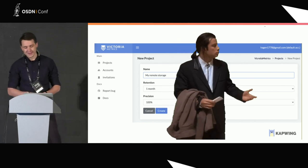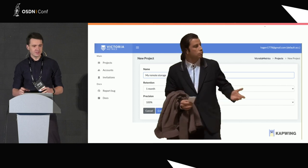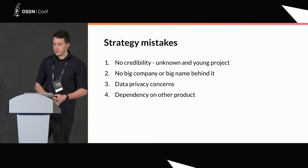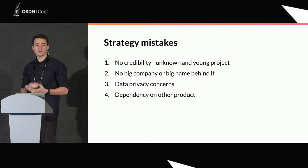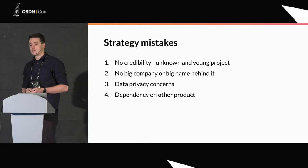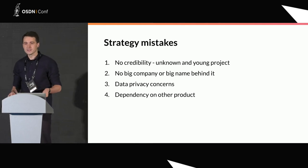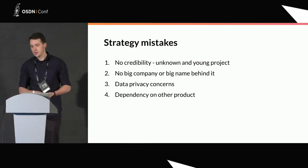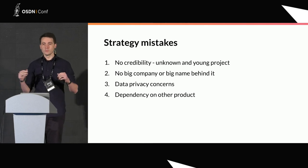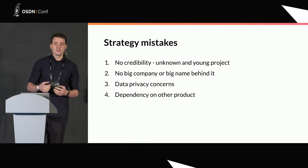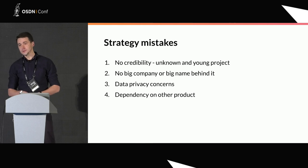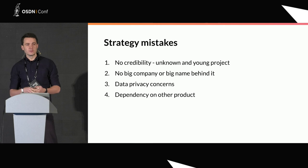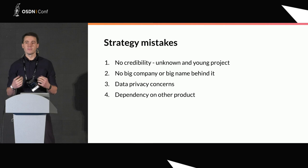I guess many of you know why. The strategy was a bit naive. A totally new, unknown database and company expects users to trust their data — and that will never work. What were our strategy mistakes? We had no credibility. Totally new, unknown project, and people tend to believe that everything younger than five years will be full of bugs and not production-ready. There was no big company or big name behind us. Also, the SaaS model assumes users will store their data in our cloud — do they even know if we have money to pay for that storage? And also, dependency on another product: having Prometheus in the title gave us some traction, but it also bound us, made us supplementary, not a whole.